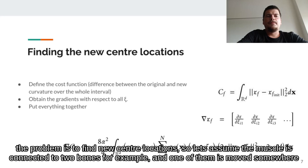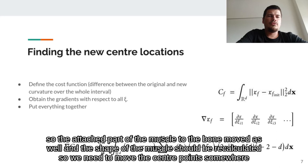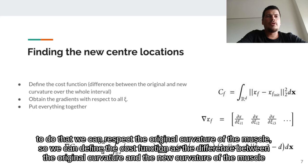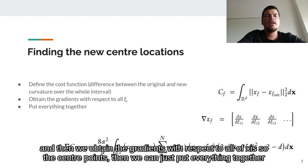The problem is to find the new center locations. Let's assume the muscle is connected to two bones, and one of them is moved somewhere, so the attached part of the muscle to the bone is moved as well, and the shape of the muscle should be recalculated — so we need to move the center points somewhere. To do that, we can respect the original curvature of the muscle, so we can define the cost function as the difference between the original curvature and the new curvature of the muscle, and then we obtain the gradients with respect to all axes of the center points, and we can put everything together.